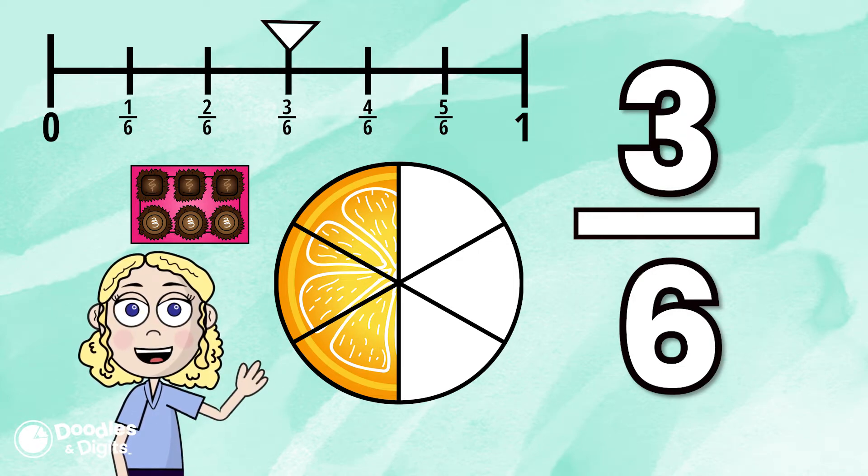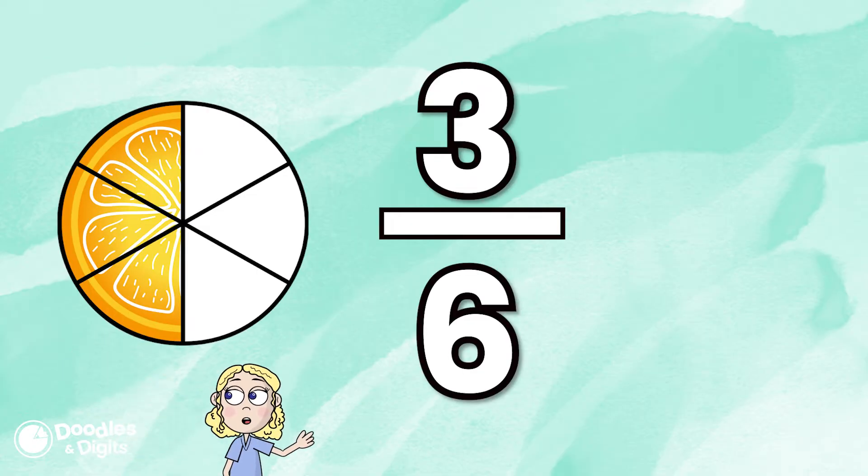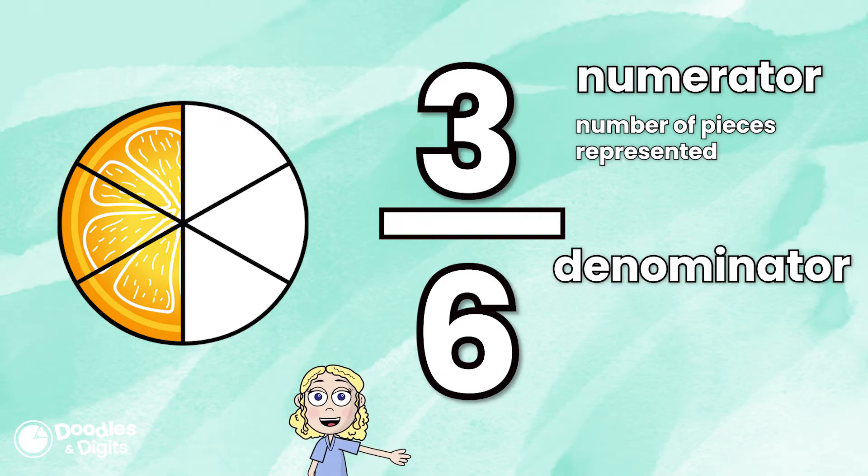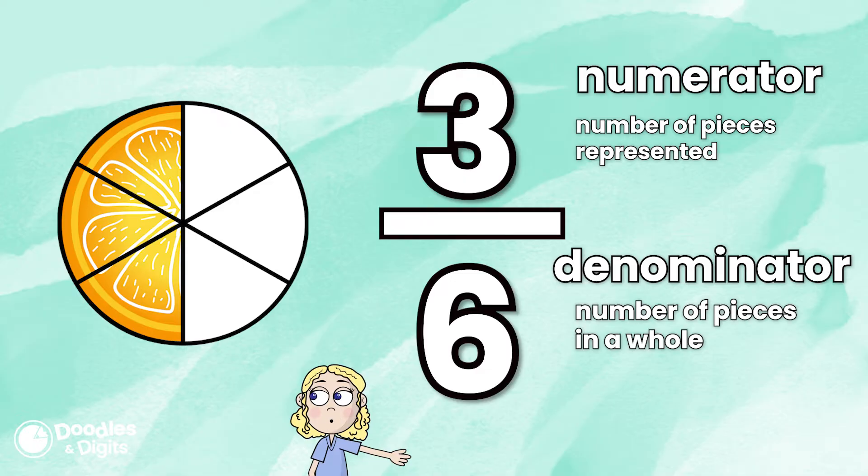Let's look at a model that matches this fraction. The numerator is the number of pieces that is actually represented or that we have. The denominator actually represents how many equal pieces are in a whole.